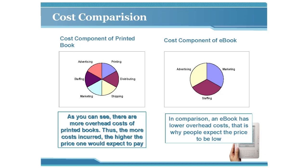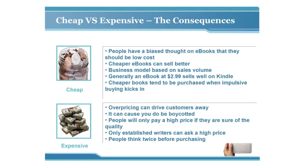Next, let's look at a quick comparison of cheaply priced versus expensively priced ebooks. With cheaply priced ebooks, people have a biased thought that ebooks should be low cost, they can sell better on a volume model, and an ebook at $2.99 tends to sell well on Kindle. Cheaper books also benefit from impulse buying. With expensively priced ebooks, overpricing can drive customers away, cause a boycott, and people will only pay a high price if sure of the quality.